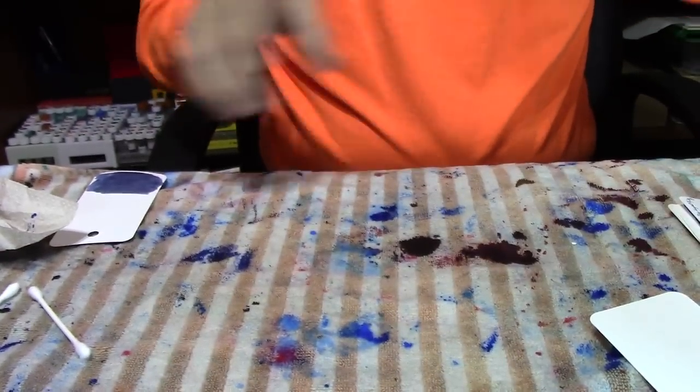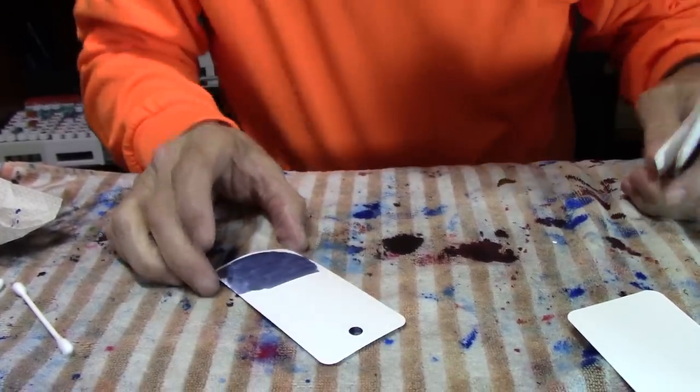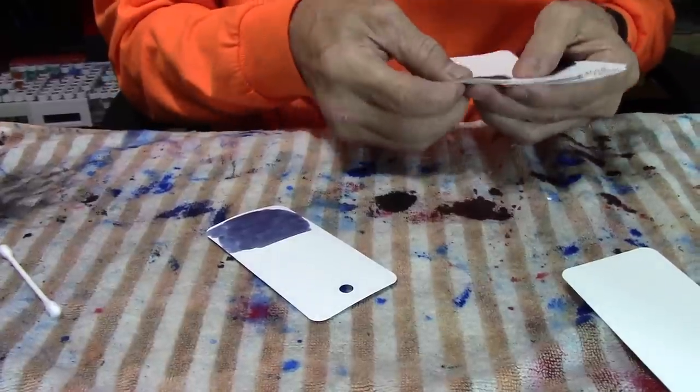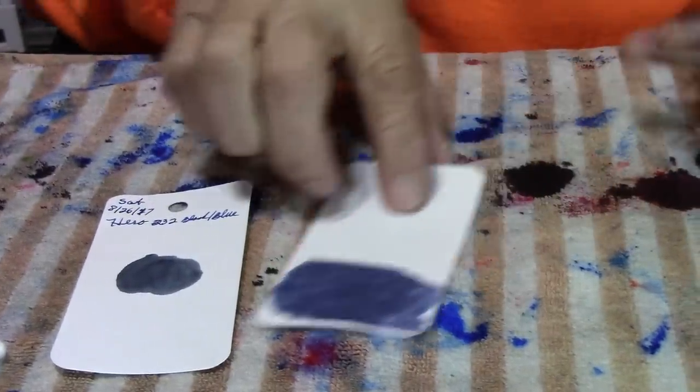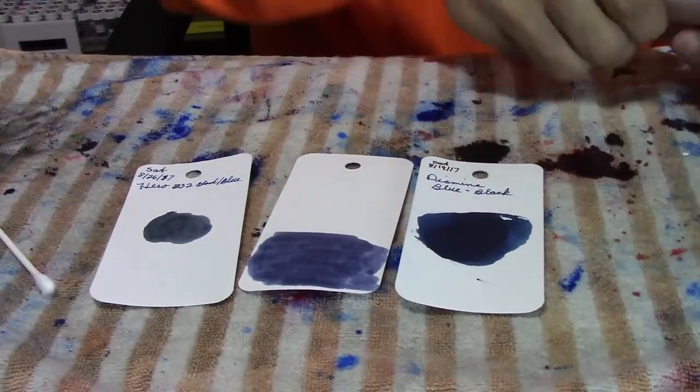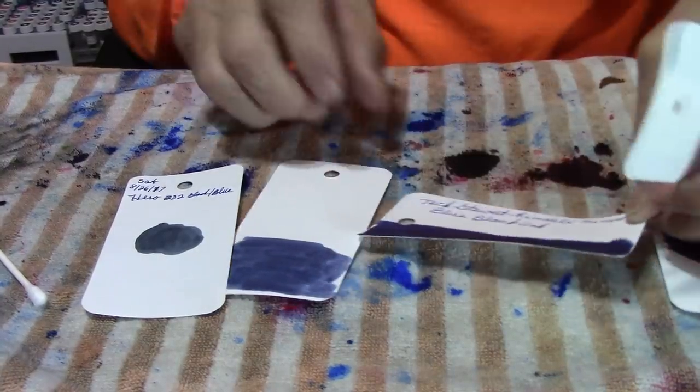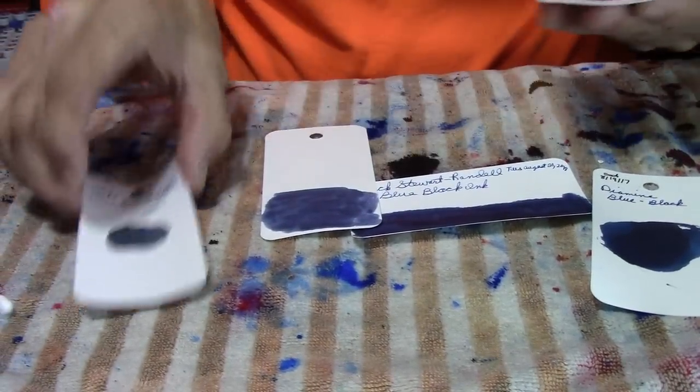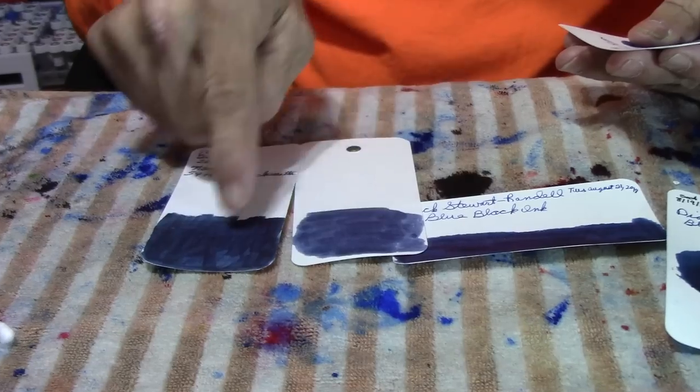We'll put these aside and then we'll do a little bit of ink comparison. Here is the Mont Blanc Midnight Blue. And here's the Hero 232 Black Blue. And then here's the Diamine Blue Black. Then here is the Nathan Tardif Randall Blue Black. Then I just thought I'd throw some of these in for the heck of it. And here's the Noodler's 54th Massachusetts. Kind of looks kind of close, doesn't it? Similar.